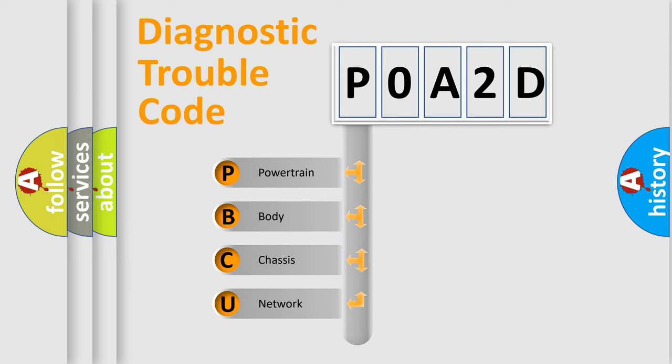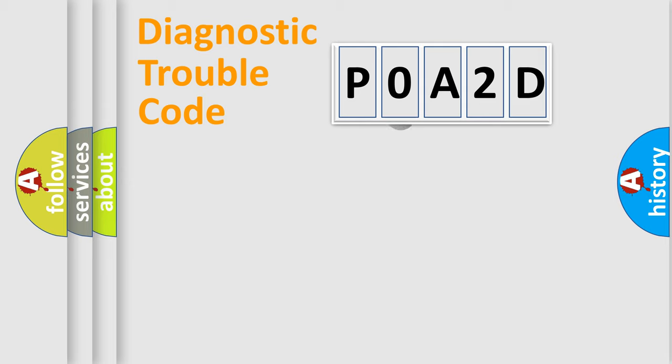We divide the electric system of an automobile into four basic units: Powertrain, body, chassis, and network. This distribution is defined in the first character code.